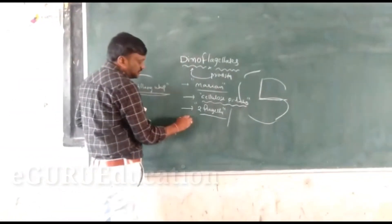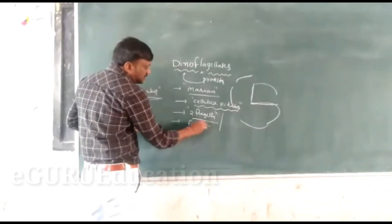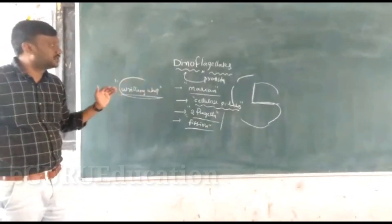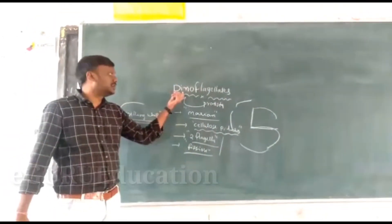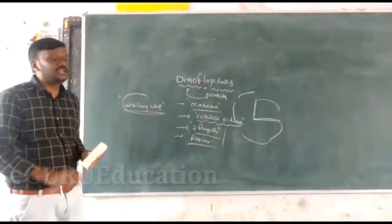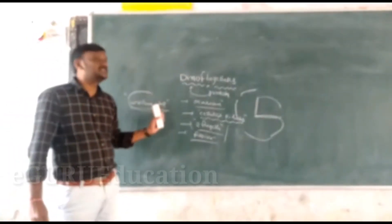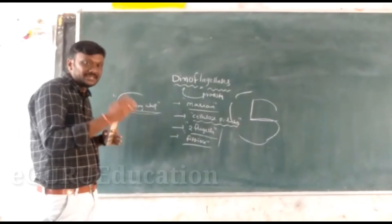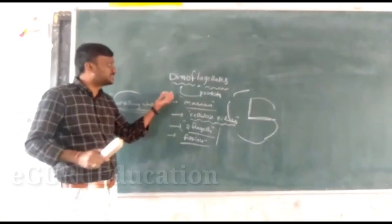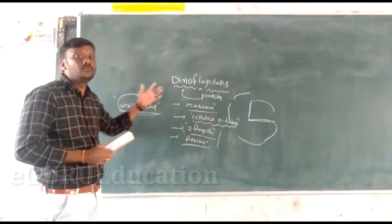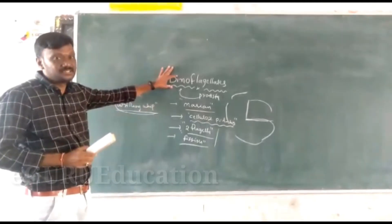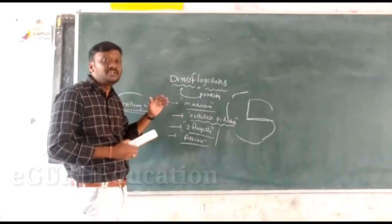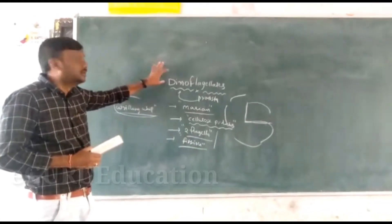At the same time, these dinoflagellates also participate in reproduction — both asexual and sexual. Fission is the asexual reproduction, and multiple fission is also asexual reproduction in dinoflagellates. At the same time, these dinoflagellates also participate in bioluminescence. The best example of dinoflagellates is Gonyaulax. This Gonyaulax is producing some toxins on the surface of the ocean. These toxins cause the death of fish in the ocean.